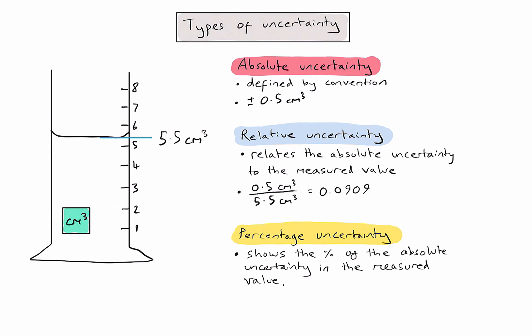Because I'm doing a division calculation here, I need to consider the smallest number of significant figures in the values I've used. There's one significant figure in the top value, two in the bottom value. So I need to give my answer to the smallest number, which would be 1. So my final answer is going to be 0.09.